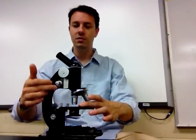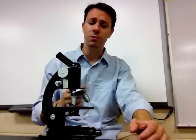We also have the stage where the slide goes on. We have the slide clips, stage clips. Under here, we have the diaphragm. There's a little knob here that allows more or less light through. If we're looking at things that are thick, we're going to want a lot of light through. But if we're looking at things that are very thin, then we're only going to want to let a little bit of light through.